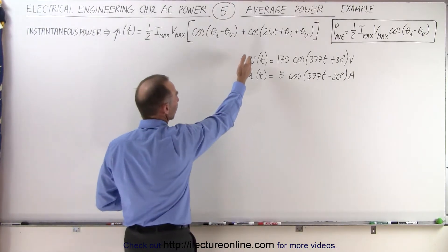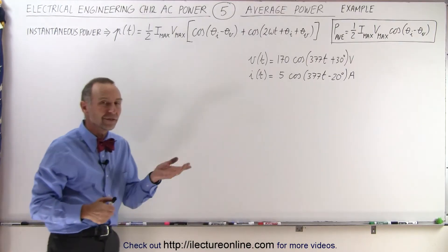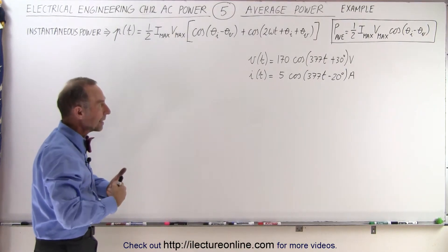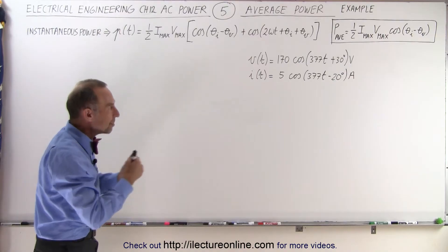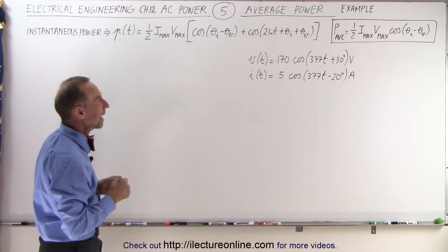Given the two functions, the voltage function and the current function which we used in a previous example when we calculated the instantaneous power, let's now use those same two equations to find the average power.